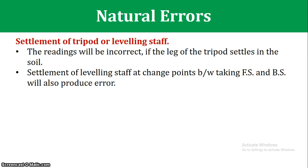Another natural error is the settlement of the tripod or leveling staff. If the ground is soft, the instrument tripod may settle during leveling, causing errors. Similarly, if the leveling staff settles at a change point between the foresight and backsight readings, errors will be introduced.